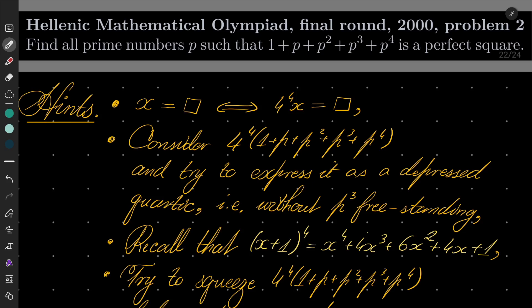Then, consider the expression, consider our sum multiplied by 4 to the 4th power and try to express it as a depressed quartic. What is a depressed quartic? It's a polynomial of degree 4 but without the cube term, without p cubed prestanding.